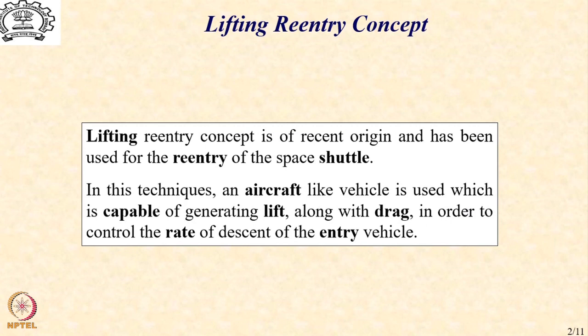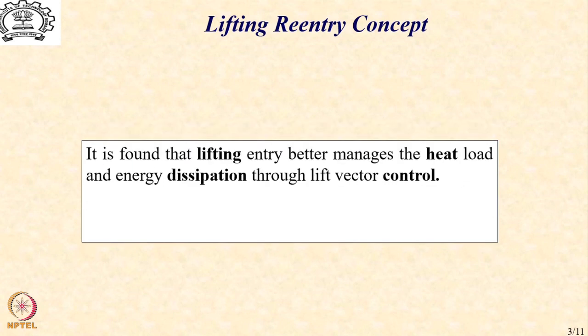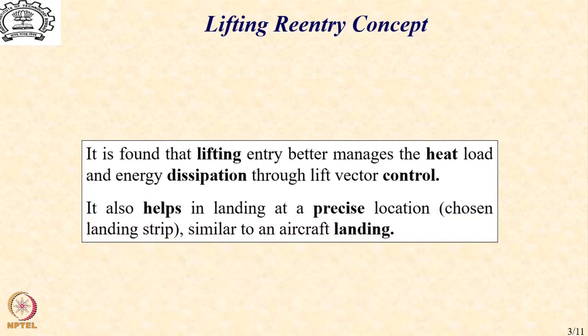The first object to make use of lift to manage both the drag and the heating requirements. So, in this technique, typically an aircraft like vehicle is used which is capable of generating lift along with drag in order to control the rate of descent of the entry vehicle. It is found that lifting entry better manages the heat load and energy dissipation through lift vector control. That is the primary mechanism that is used for lifting reentry. It also helps in landing at a precise location similar to an aircraft landing.